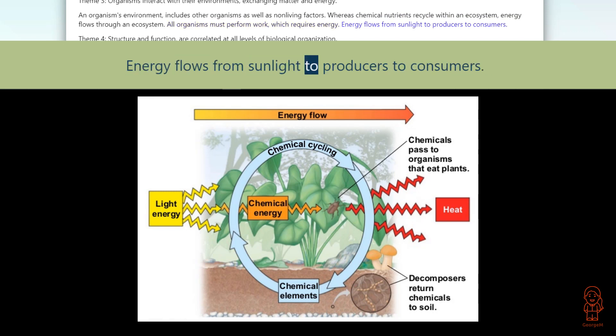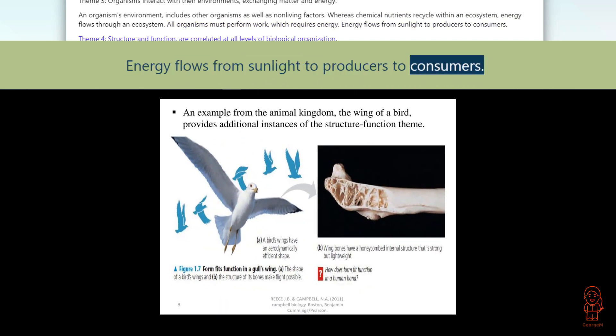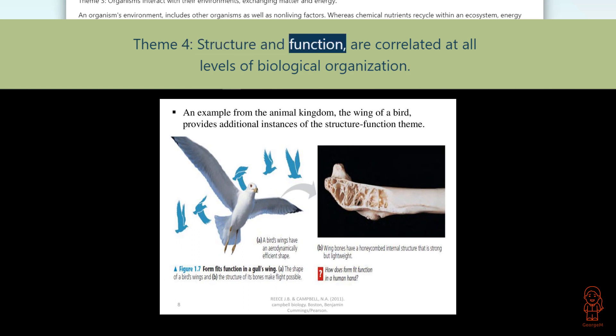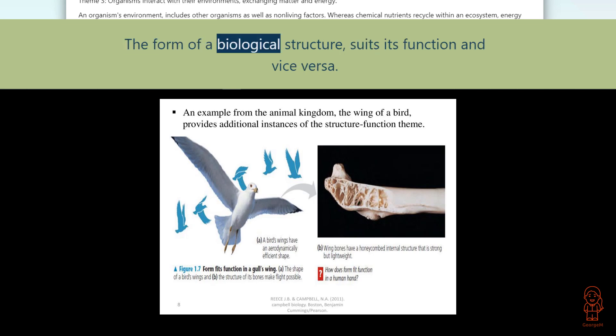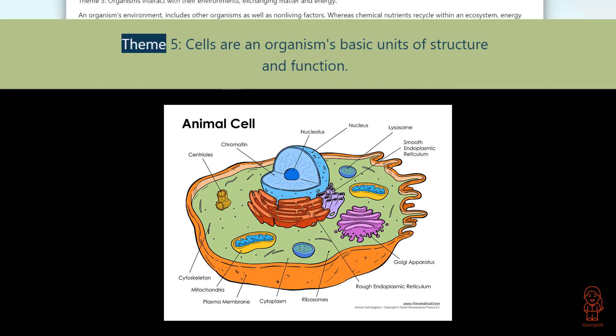Energy flows from sunlight to producers to consumers. Theme 4: Structure and function are correlated at all levels of biological organization. The form of a biological structure suits its function and vice versa. Theme 5: Cells are an organism's basic units of structure and function.